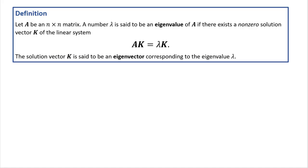Let A be an n by n matrix — this means it's a square matrix. A number lambda, the Greek letter lambda, is said to be an eigenvalue of A if there exists a non-zero solution vector k such that multiplying matrix A by vector k gives exactly the same result as multiplying the number lambda by vector k. That solution vector k is called the eigenvector corresponding to eigenvalue lambda.